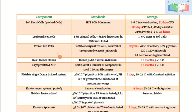For frozen red blood cells, more than 85% of original red cells must be retained after removal of the cryoprotective agent glycerol. These RBCs can be stored for 10 years at −65°C or colder using 40% glycerol, or at −120°C using 20% glycerol. Once deglycerolized, the expiry is 24 hours. For fresh frozen plasma (FFP), store at −18°C, collecting plasma from whole blood within 6–8 hours. Storage is 12 months at ≤−18°C.